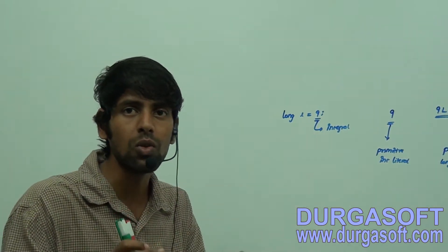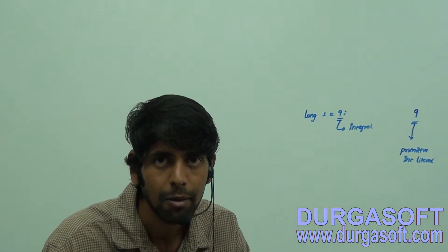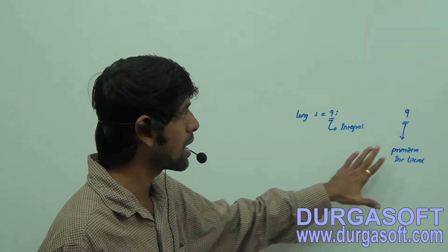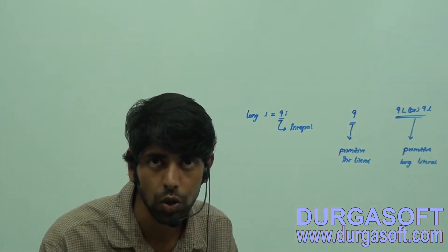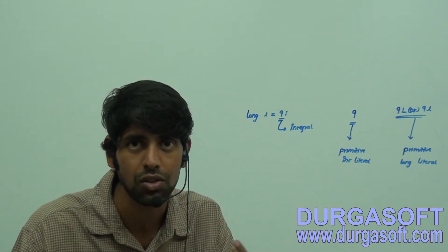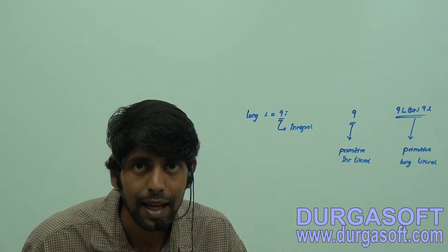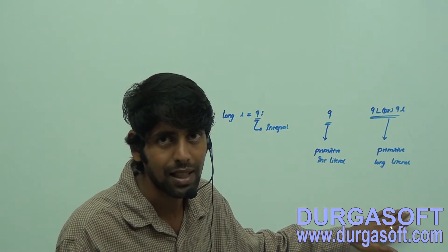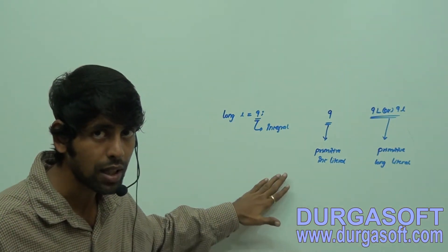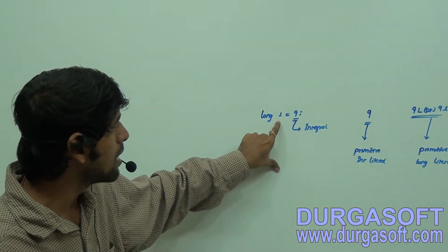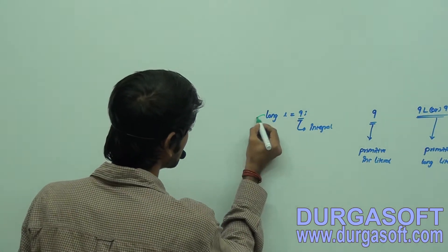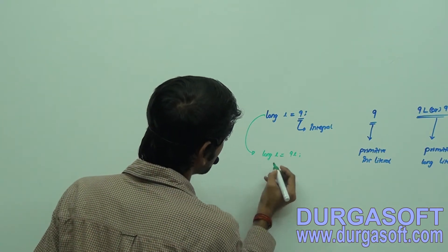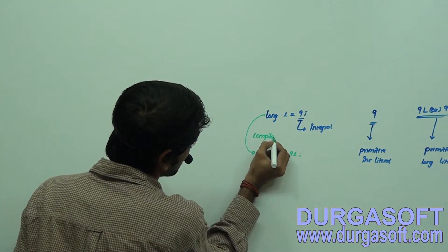The value will remain as-is, but the type is going to change. This is very important. JVM and the compiler are not human — they use the type in a precise way. After compilation, it will be represented as 9L.